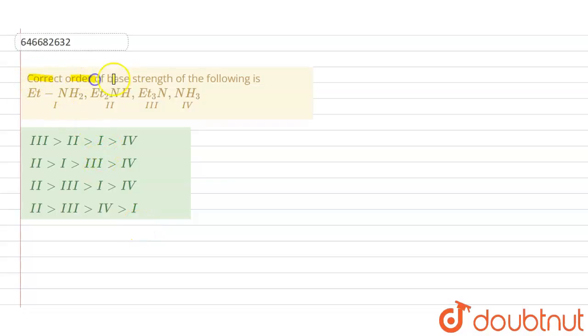We have to compare the basic strength of these compounds. What is basic strength? Any compound which can donate its lone pair is called a base. Higher the electron density of the nitrogen, higher will be the basic strength.